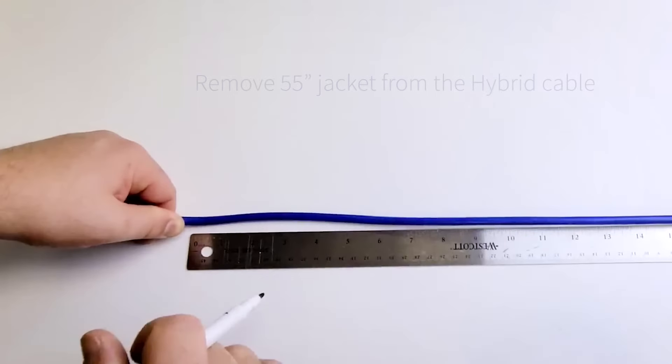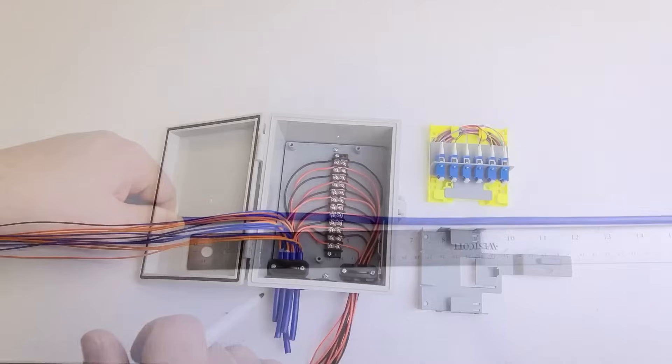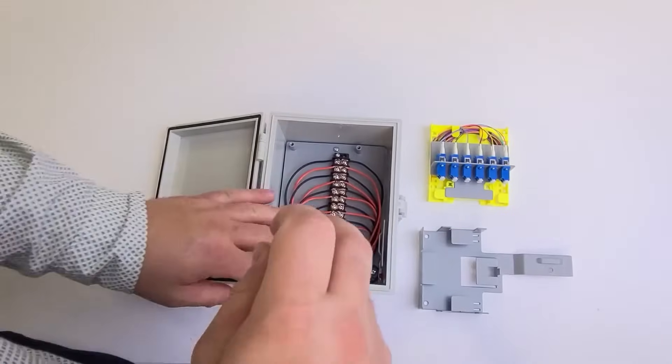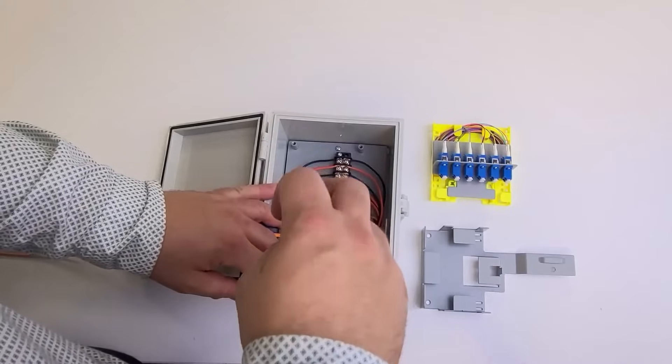Next, remove approximately 55 inches of jacket from the hybrid cable. You need six hybrid cables for this example, so apply these steps to all six. Feed the hybrid cables through the entry point and secure them in place by tightening the two screws on the strain relief bracket.